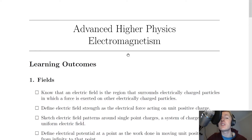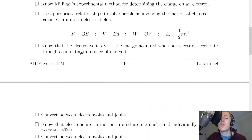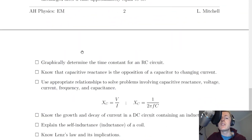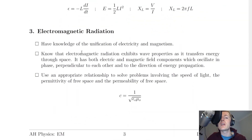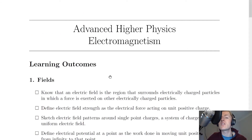The SQA splits the electromagnetism topic into three subtopics or three key areas. These are fields, circuits, and electromagnetic radiation. We're going to look at each section in turn and look at the learning outcomes.